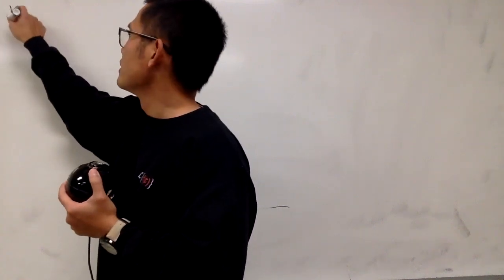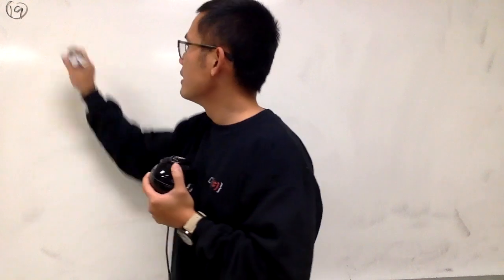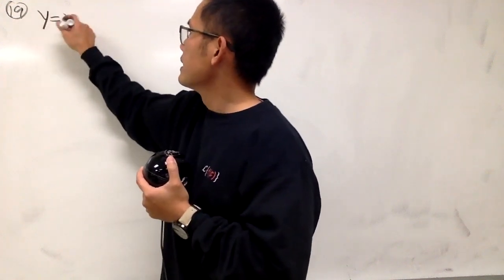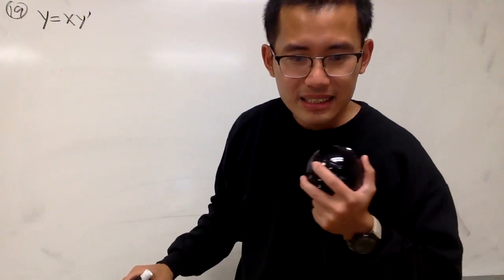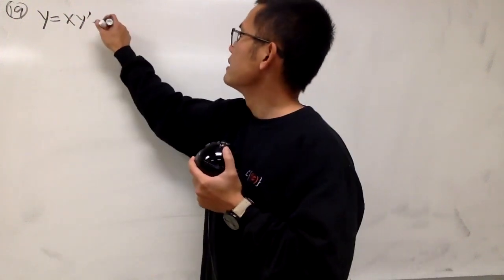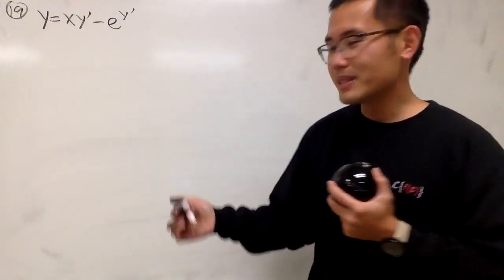Number 19. Finally, we are moving forward. Number 19, y equals xy prime minus e to the y prime power. Yes, Clairaut. Again, right?